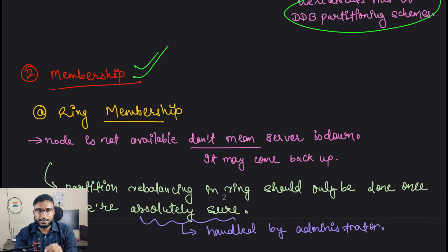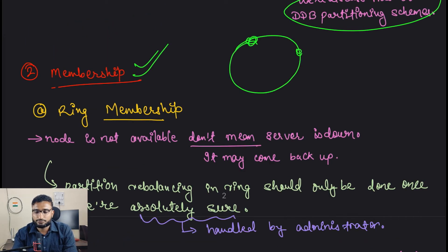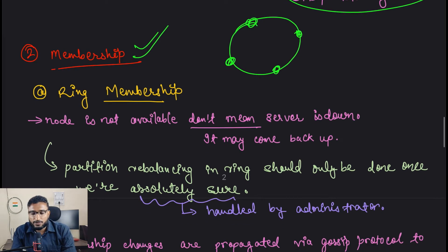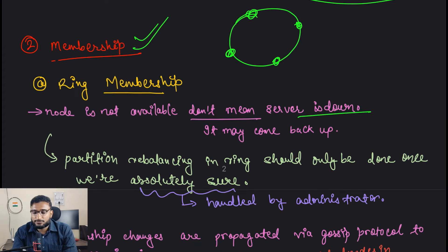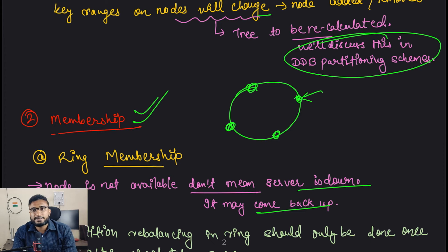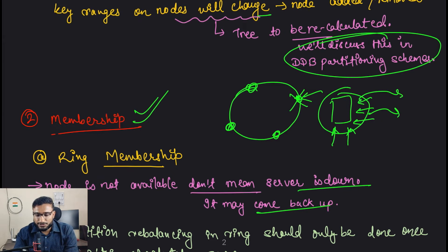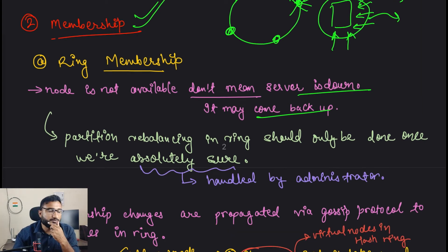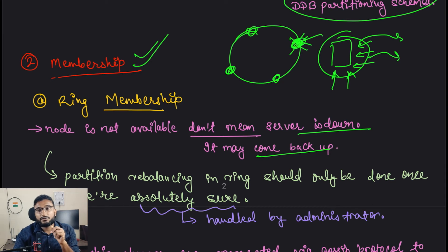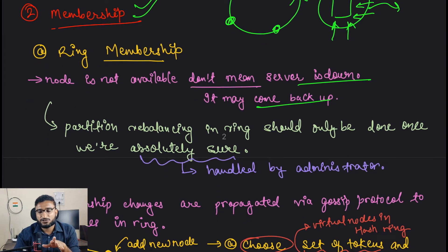The second topic is membership. We have a ring with nodes. If a node is not available in the ring, it doesn't necessarily mean the server is down. It might be that there is a huge load on that node and it's temporarily not responding to health checks - it may come back after five minutes. So we should not rebalance the partitions in the ring until we are 100% sure the node is truly down.